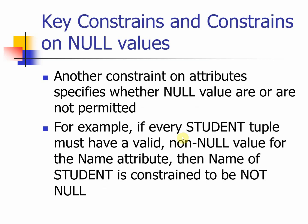Another constraint specifies whether null values are permitted. If you define a primary key, its attributes cannot be null, because they need to uniquely identify tuples and be referenced by other tables. At the same time, you can also specify that non-primary-key attributes — such as student name — cannot be null. This is similar to the required fields marked with a star sign when applying for a credit card online. So not only the primary key must have a not-null constraint; other attributes can also have this constraint.